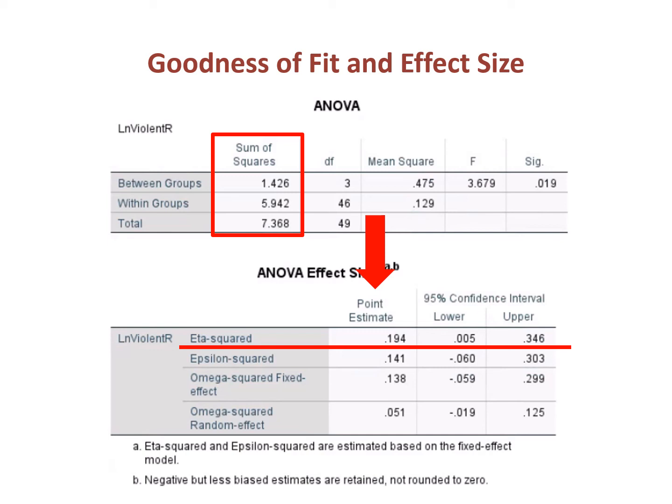So now when we look at our Eta squared of 0.194, we see we have a medium-sized effect. That 0.194 is also the percent of the total sum of squares explained — 19.4%. We can verify this: 1.426 (between-groups sum of squares) divided by 7.368 (total sum of squares) equals 0.194. So we have a 19.4% improvement in the model because we used the regional means as our predictor for a state's violent crime rate rather than the national mean. We established that the difference was statistically significant using the F ratio, and established it was a medium-sized effect using Eta squared.